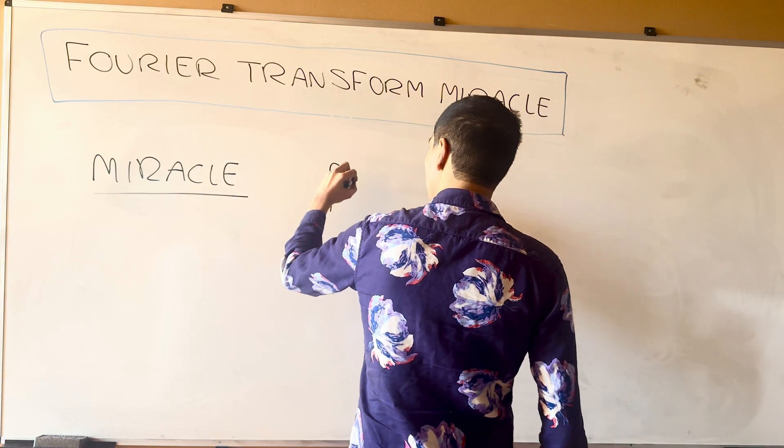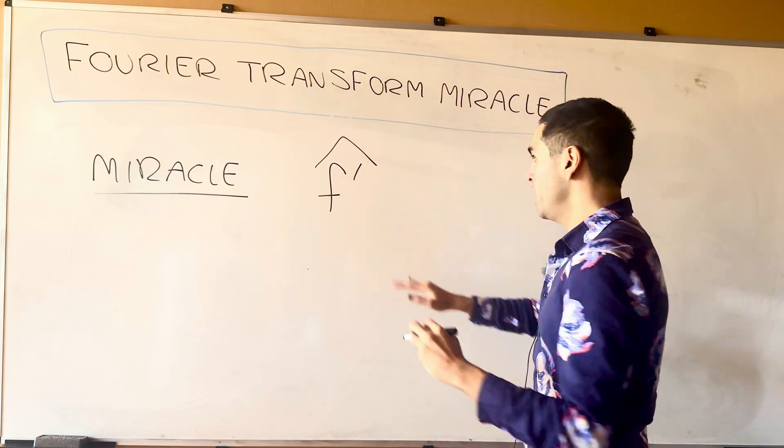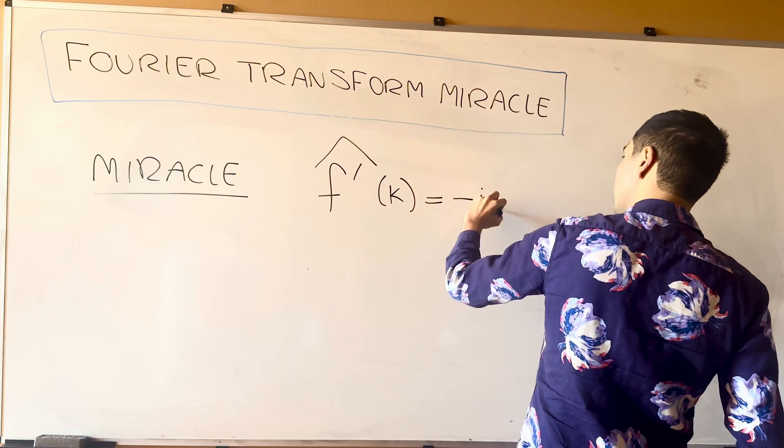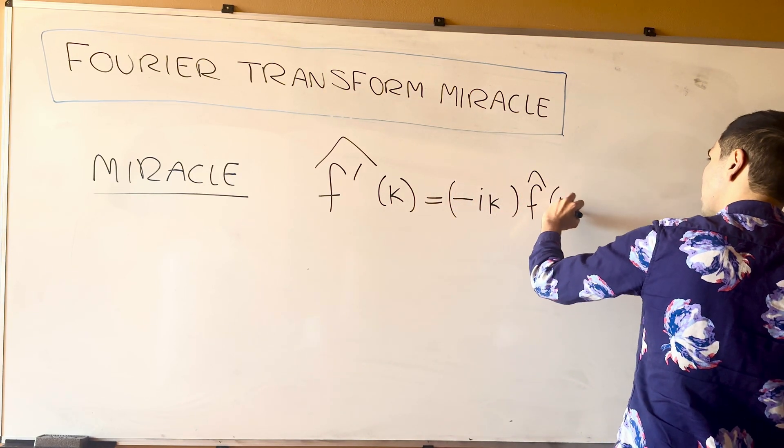namely, if you take the Fourier transform of f prime, all it gives you is minus, so some number, times the Fourier transform of f.